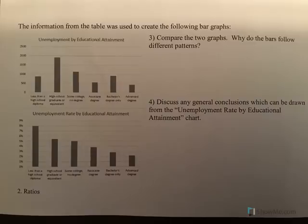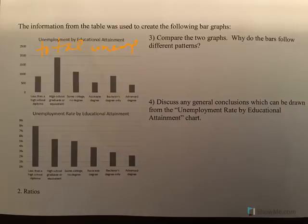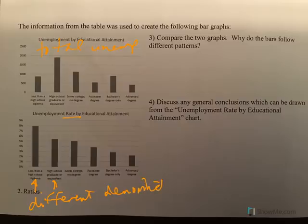This information is now given in two different bar graphs. Compare the two graphs — why do they follow different patterns? Both are talking about unemployment. The top graph talks about unemployment in terms of numbers, and the bottom is unemployment in terms of rate. The top uses total unemployment, comparing everything to everybody with the same denominator. In the bottom graph, remember how we found those rates — each group had a different denominator because we were talking about different groups. Less than a high school diploma was the number unemployed in that group out of the total for that group. Since they have different denominators, that's why they have different patterns.